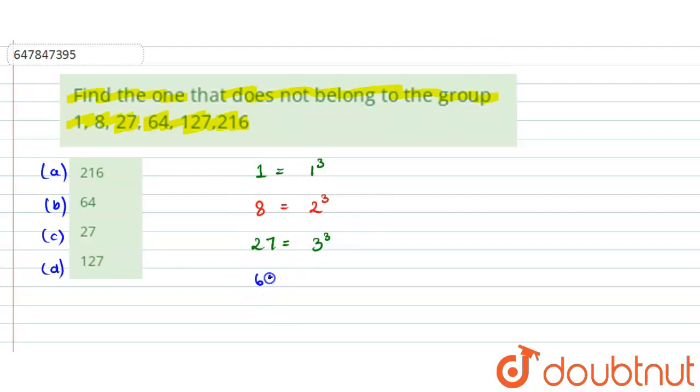Next, we have 64. So, 64 is 4 cube. The pattern here is consecutive numbers' cubes are written. Okay?